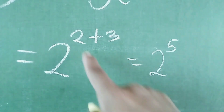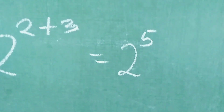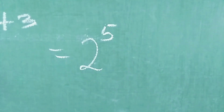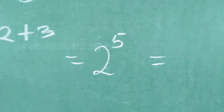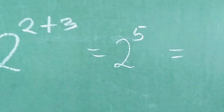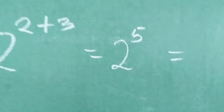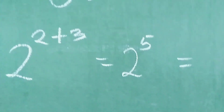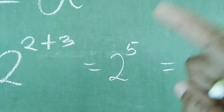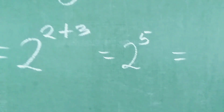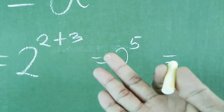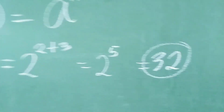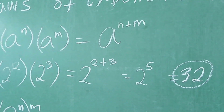Bakit naging 5? Kasi ang exponent niya is 2 plus 3. Yung 2 raised to 5, final answer na ba yan? Yes, in some other way. Pero para sa akin, gusto ko na isimplify mo yung 2 raised to 5. Ano ang ibig sabihin ng 2 raised to 5? You are going to multiply 2, 5 times to itself. Mali po yung kung ang sagot nila ay 10 — hindi po. 2 raised to 5 means 2 times 2 times 2 times 2 times 2 — 5 times. So we have: 2×2=4, 4×2=8, 8×2=16, 16×2=32. So ang sagot natin dito is 32.